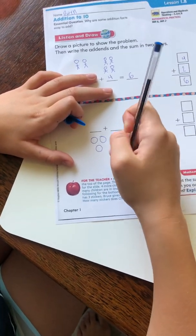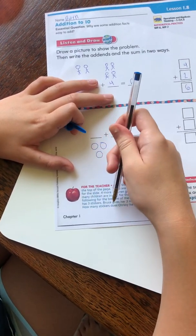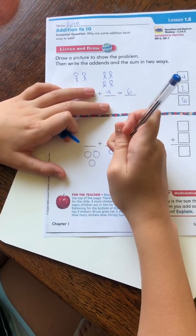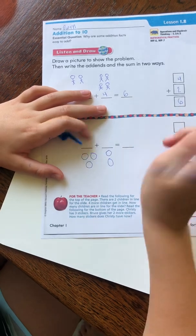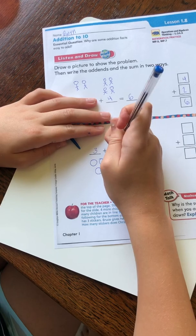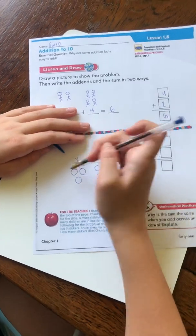But then, it says, Bruce gives her two more stickers. So then, Bruce gives Christy two more stickers. But I know this is three here, and I know there's two here, so I'm going to write those in the word problem.